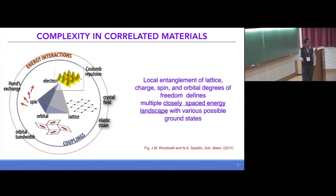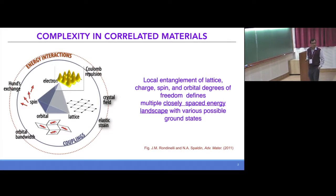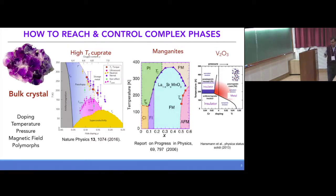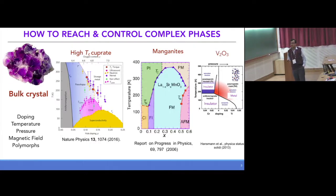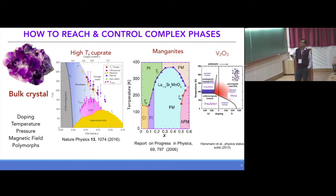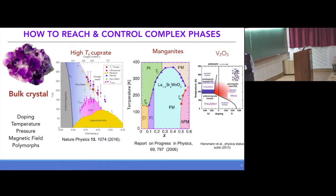We already know about strongly correlated oxides. One of the main aspects is the strong intercoupling between the spin, charge, lattice, and orbital degrees of freedom. As a result, they exhibit various fascinating electronic and magnetic phenomena like superconductivity, metal-insulator transition, magnetism, etc. These phenomena are highly tunable — for example, you can start with an antiferromagnetic insulating phase, then if you dope it you get a superconducting phase. Similarly, this is the phase diagram of V2O3 where the axis is pressure; at a given temperature if you apply pressure it transitions from antiferromagnetic to paramagnetic, meaning there is a coupling between spin and structure.